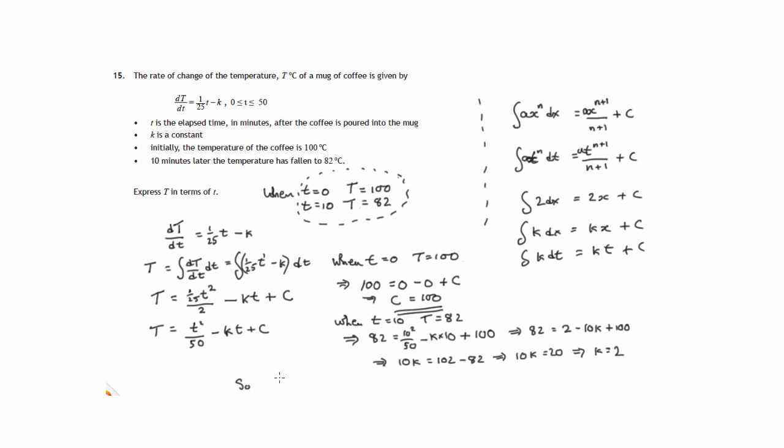So finally, the expression we've been looking for, capital T is equal to a 50th of t squared, t squared over 50, minus 2 times t plus the constant, which we knew was 100. We worked that out as 100. So there's the expression for T in terms of little t. It's a quadratic expression.